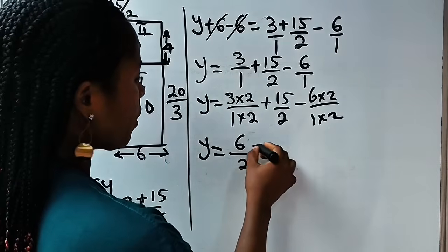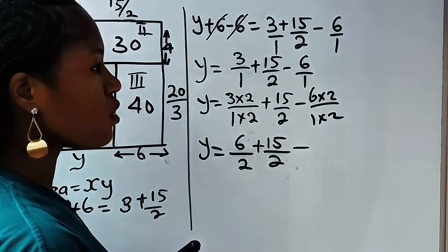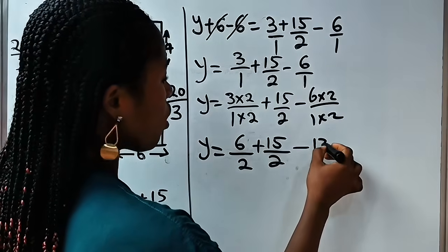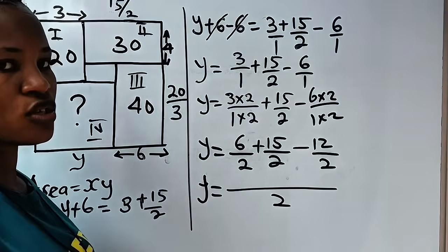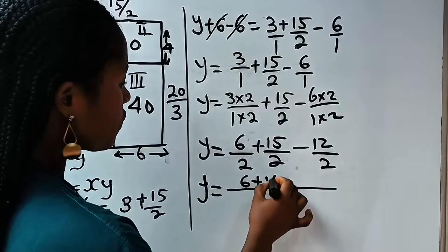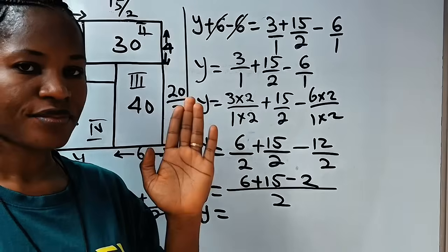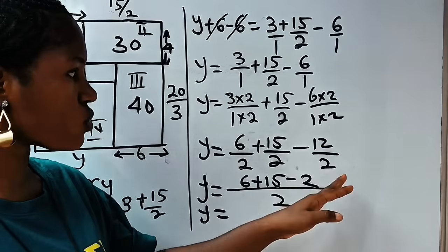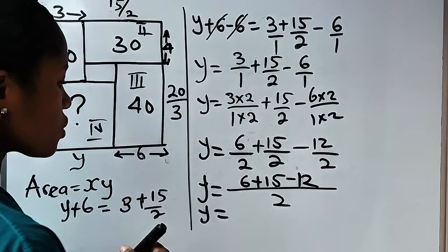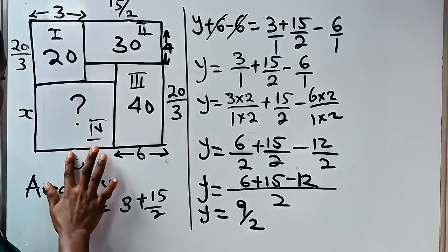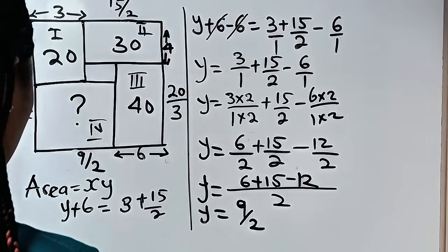So we have y equals 6 over 2 plus 15 over 2 minus 12 over 2. Since they share the same denominator of 2, we combine numerators: 6 plus 15 minus 12. That gives us 21 minus 12, which equals 9. So y equals 9 over 2. We replace y with 9 over 2.